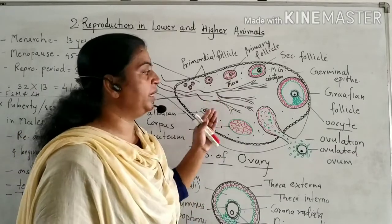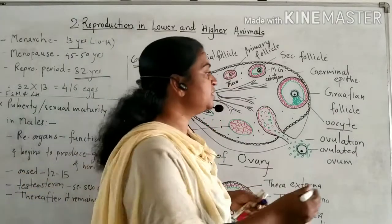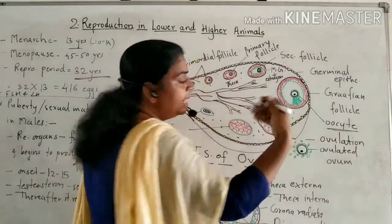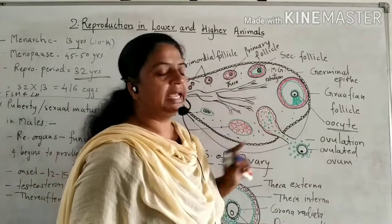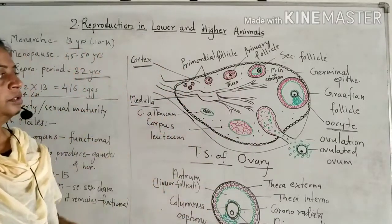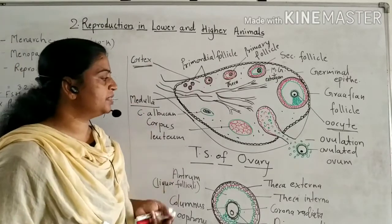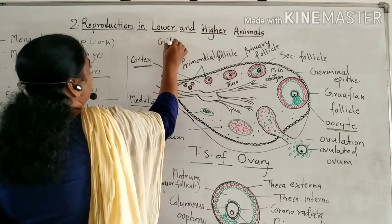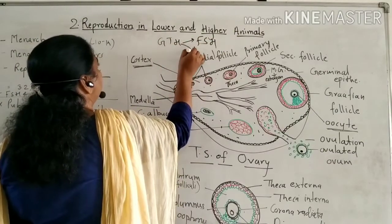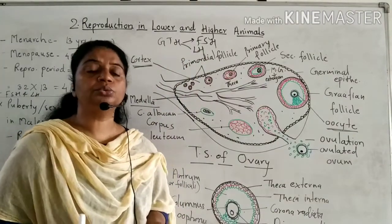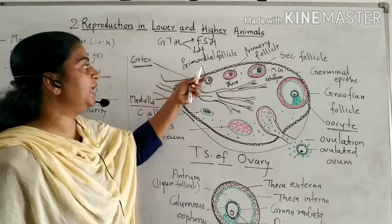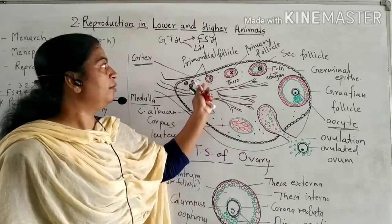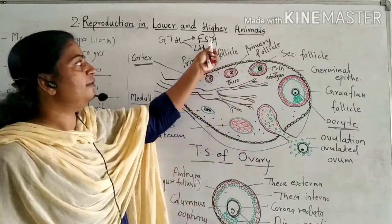These cyclic changes occur in the ovary, as well as changes in the oocyte within the follicle, because of the influence of gonadotropin hormones. There are two types: FSH and LH, secreted by the pituitary in females, which influence these changes. FSH influences the development of the primordial follicle into the Graafian follicle.